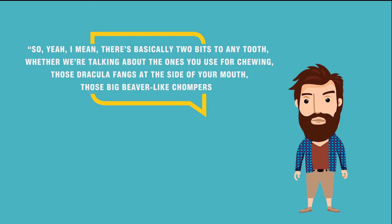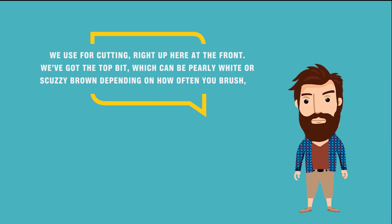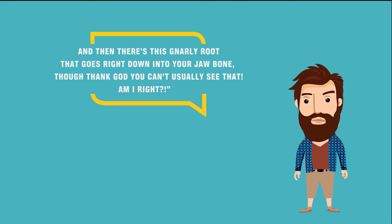Now imagine that you are in that same dental anatomy class, but the lecturer decides to provide the following description instead. Students might understandably feel that the discourse wasn't appropriate: "So, yeah, I mean, there's basically two bits to any tooth. Whether we're talking about the ones you use for chewing, those Dracula fangs at the side of your mouth, those big beaver-like chompers we use for cutting right up here at the front. We've got the top bit, which can be pearly white or scuzzy brown, depending on how often you brush. And then this gnarly root that goes right down into your jawbone. Thank God you can't usually see that. Am I right?" The first text is in keeping with the discourse genre requirements for that particular context — a lecture in a faculty of dental medicine. The second is not. And while they convey the same information, the effect is distinct. The first text underscores the professional nature of the speaker. The second text is too informal and could lead people to draw negative conclusions regarding the speaker's competence and ability.